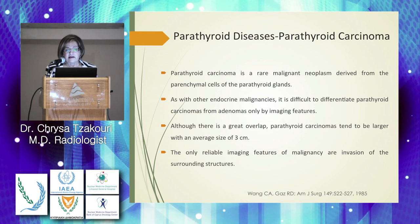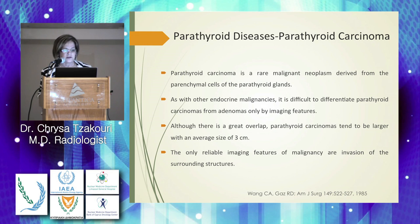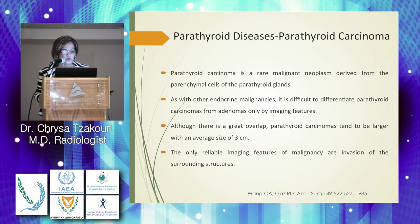Parathyroid carcinoma is a rare malignant neoplasm derived from parenchymal cells of the parathyroid glands. As with other endocrine malignancies, it is difficult to differentiate parathyroid carcinoma from adenoma by imaging features alone. Although there is great overlap, parathyroid carcinomas tend to be larger, with an average size of three centimeters. The only reliable imaging feature of malignancy is invasion of surrounding structures.